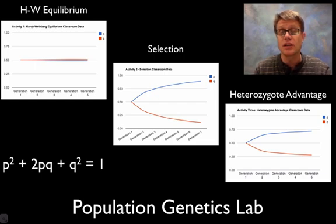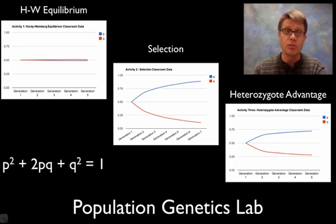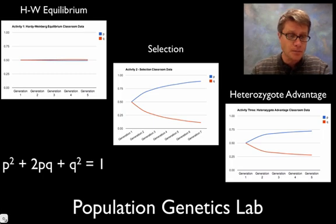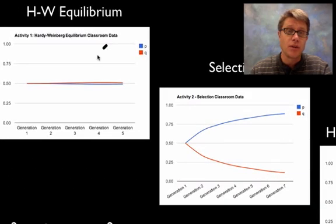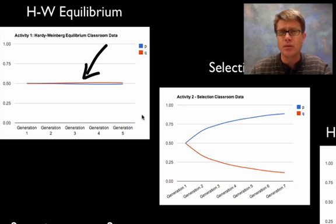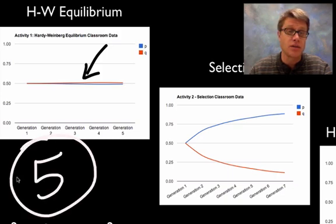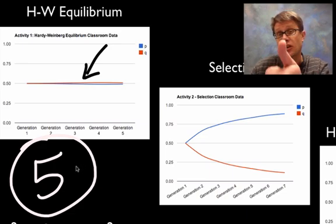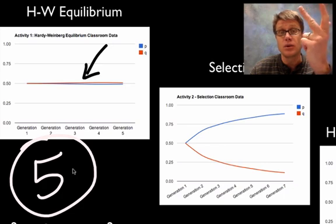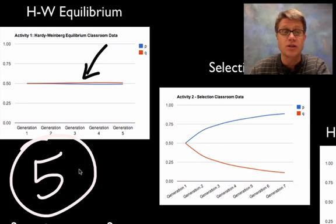Next let's talk about the population genetics lab. We took a cup, put 50 beads of different colors in it, shook them out, pulled out 40 pairs, and that set the allele frequencies for the next generation. Under Hardy-Weinberg equilibrium, the allele frequencies stayed essentially the same through all generations because we didn't violate any of the five constraints: large population size, random mating, no mutations, no gene flow, and no natural selection.